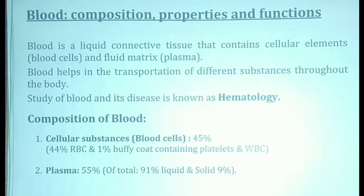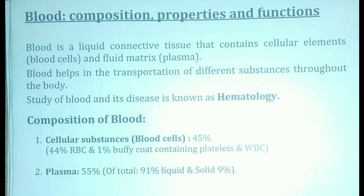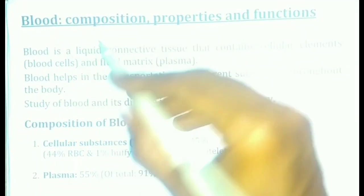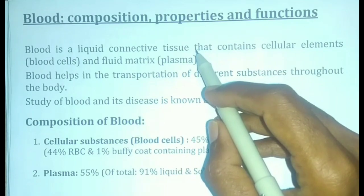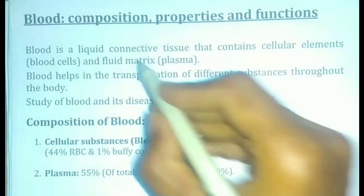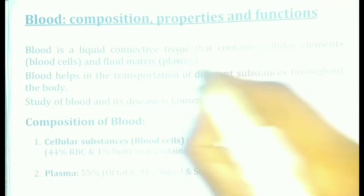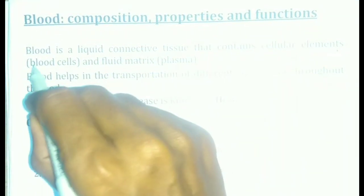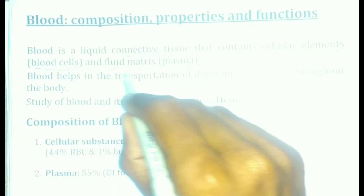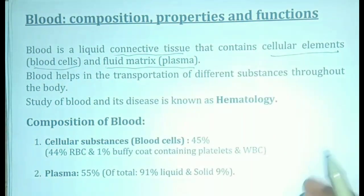Welcome to Blood Composition, Properties of Blood and Functions of Blood. This topic is called Blood. Blood is a Liquid Connective Tissue. It is a Connective Tissue that contains Cellular Elements, that is Blood Cells, and a Fluid Matrix, that is Plasma.